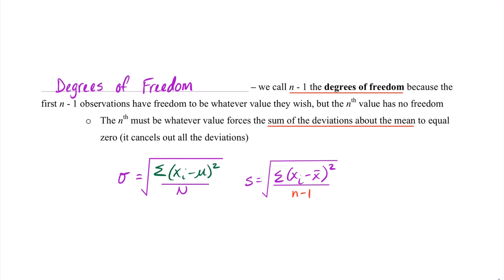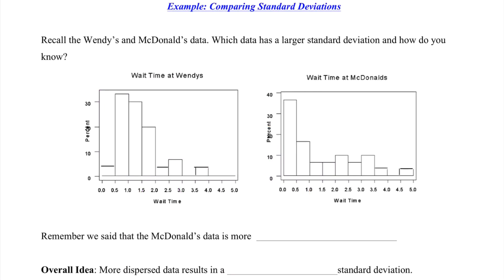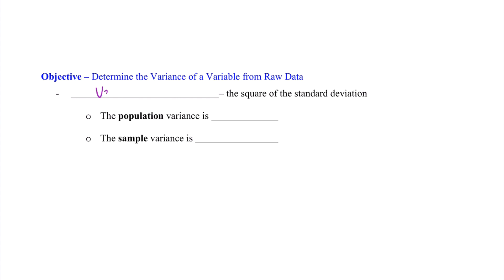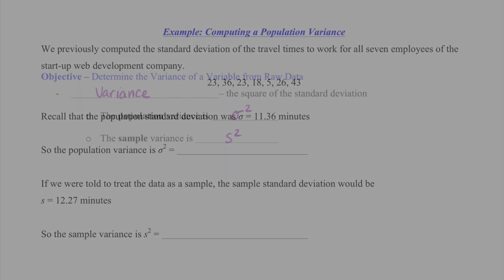The nth value cancels out all the deviations away from the mean. This is way deeper than what we need to go, but just presenting the idea of why we have n minus 1 as opposed to just n when finding our two different types of standard deviations. Now that we've covered standard deviations from both a population and a sample, let's go back to our Wendy's and McDonald's data. They're asking which data has a larger standard deviation. The McDonald's data is more dispersed, so more dispersed data results in a larger standard deviation. That takes us to our next objective: determining the variance of a variable from raw data. The variance is simply the square of the standard deviation.